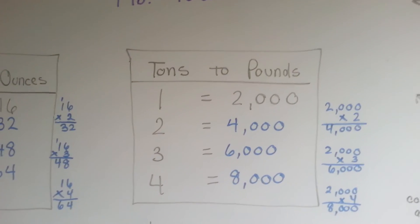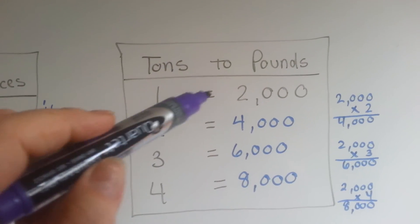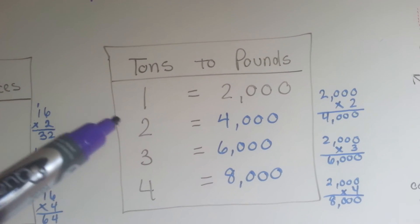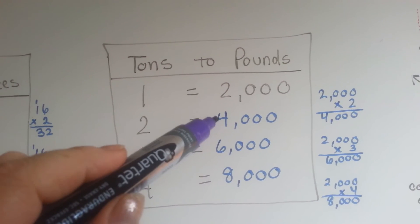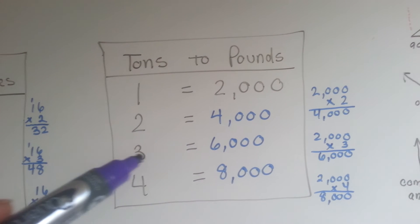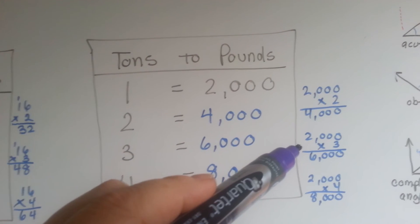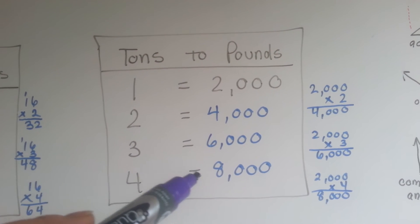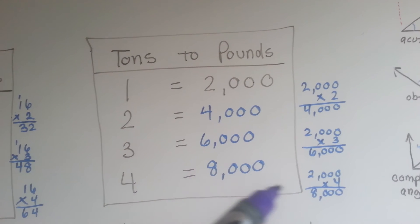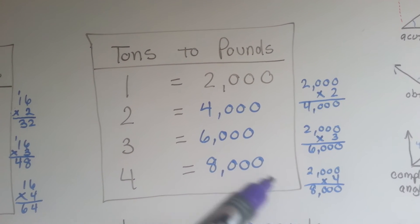So let's look at tons. One ton is two thousand pounds, so two tons would be double that, four thousand. Three tons would be six thousand. And four tons would be eight thousand pounds. Two thousand times four is eight thousand.